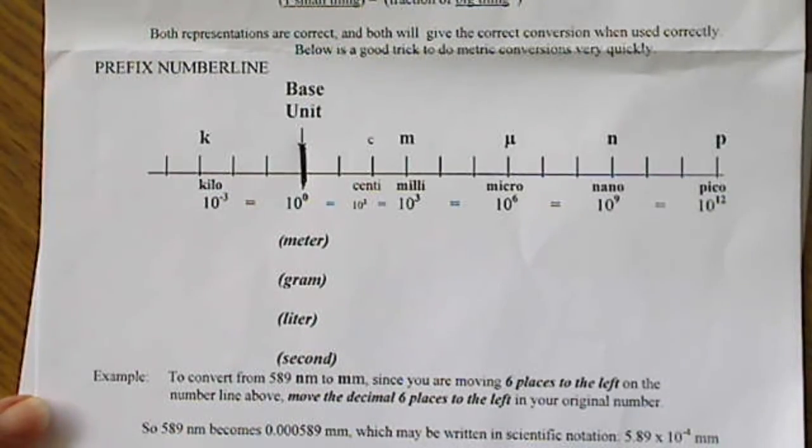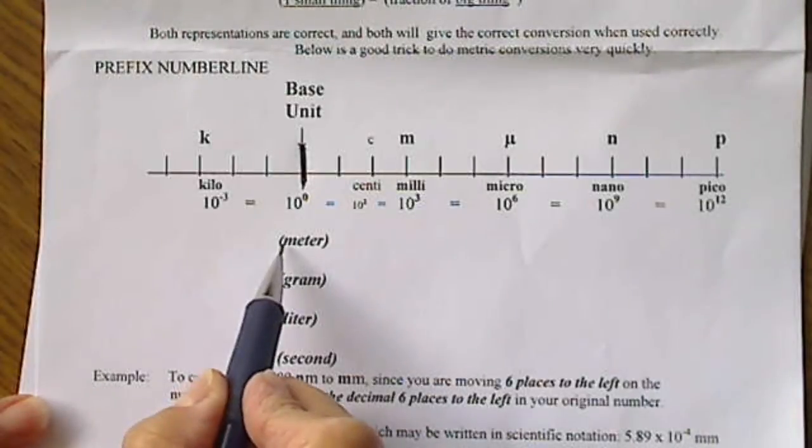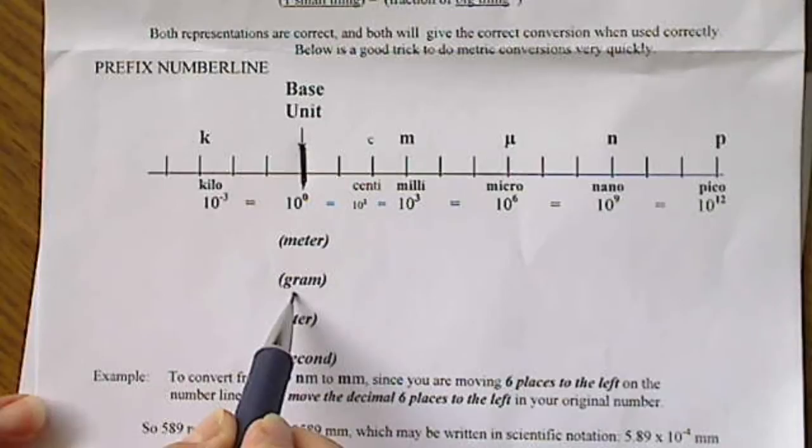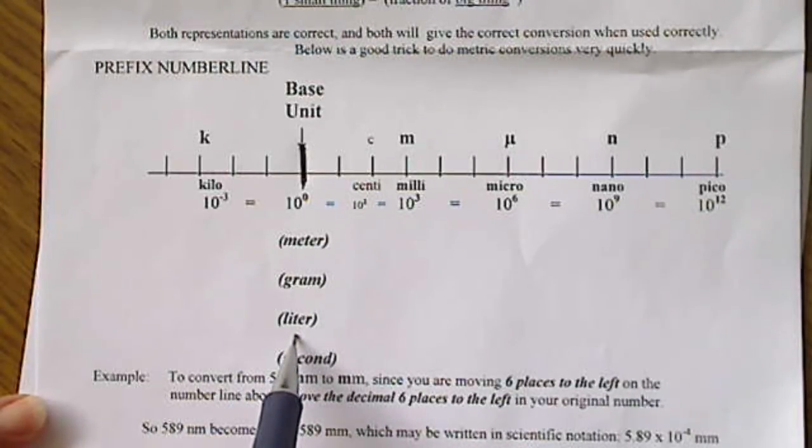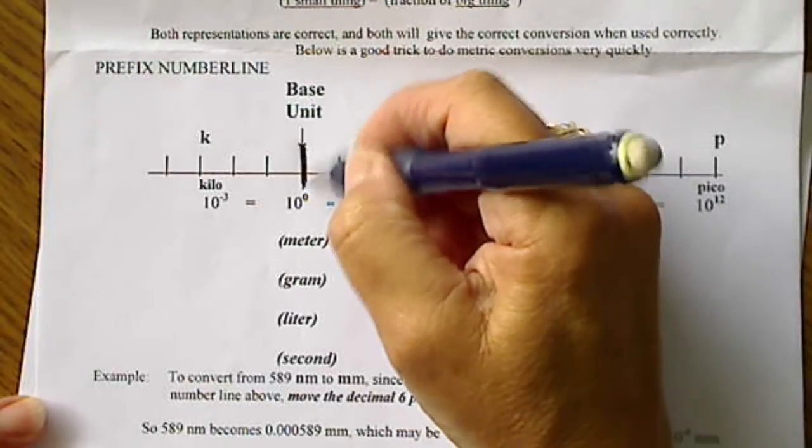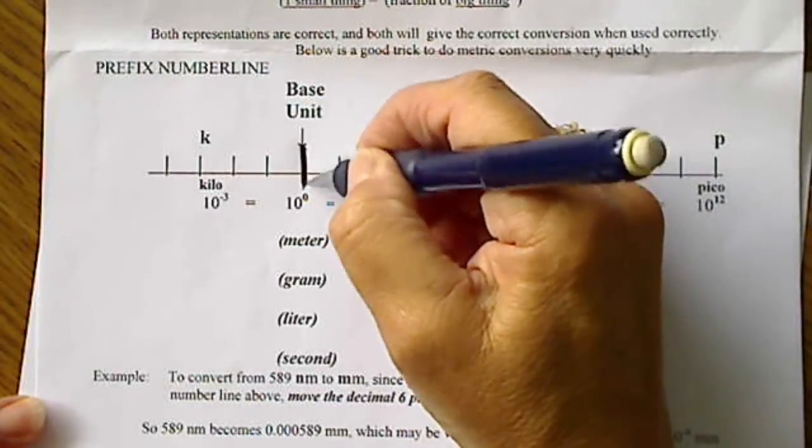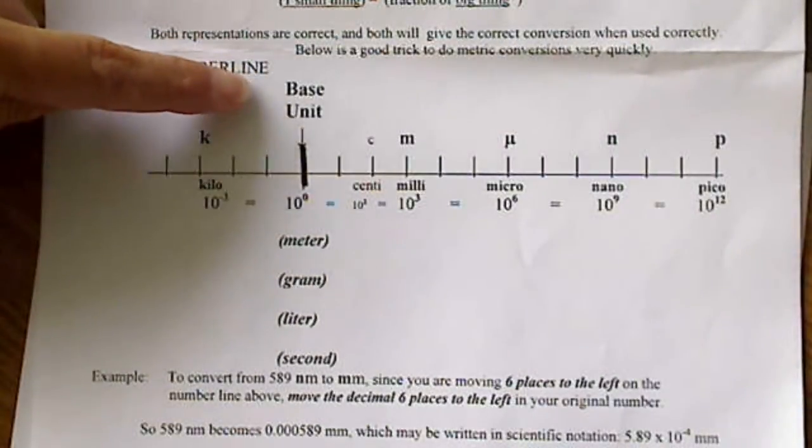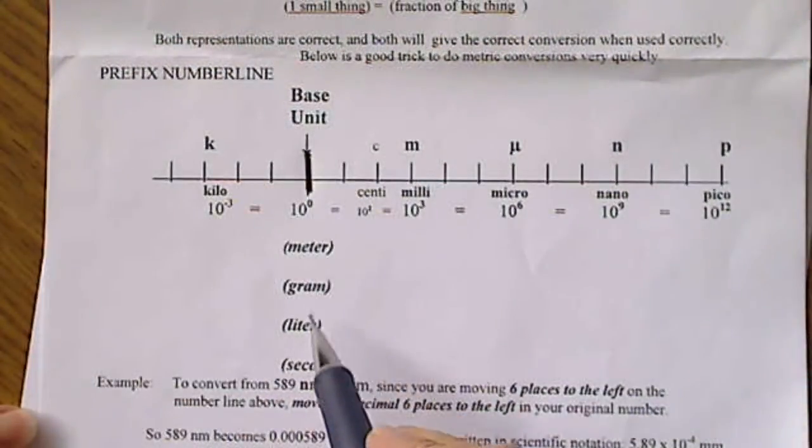On one of the earlier slides, we looked at length was measured in meters, mass or weight would be measured in grams, and volume would be in liters. So the starting point of our number line, we're going to just basically call this the zero. The base unit or the word will be here.